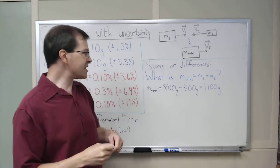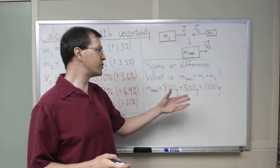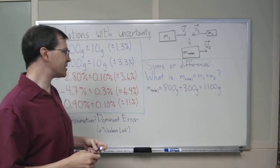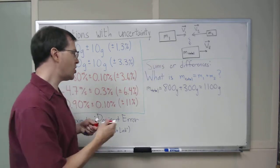This is an example of a problem where I'm taking a sum or a difference of two quantities that each have an uncertainty. In this case, what we do for sums and differences is we compare the absolute errors, compare the absolute uncertainties.